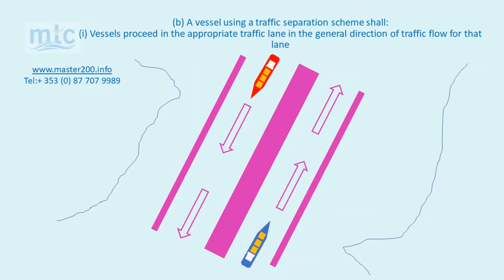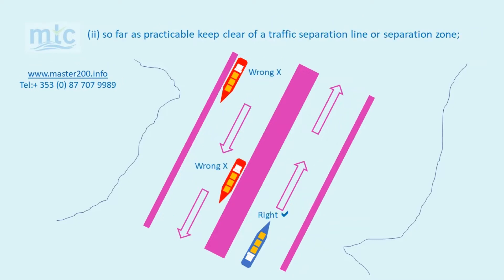Rule 10b1. A vessel using a traffic separation scheme shall proceed in the appropriate traffic lane in the general direction of traffic flow for that lane. In the diagram, the red and the blue vessel are proceeding in the appropriate traffic lane in the general direction of traffic flow for that lane.